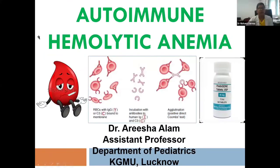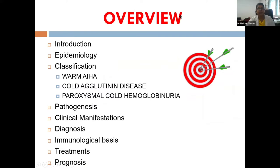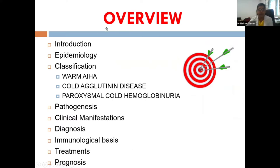Today I'm going to talk about autoimmune hemolytic anemia. The contents of my talk shall include introduction about this entity, the epidemiology, classification, and its three main subtypes: warm autoimmune hemolytic anemia, cold agglutinin disease, and paroxysmal cold hemoglobinuria. For each type I'll cover pathogenesis, clinical manifestations, diagnosis, immunological basis, treatment modalities, and prognosis.